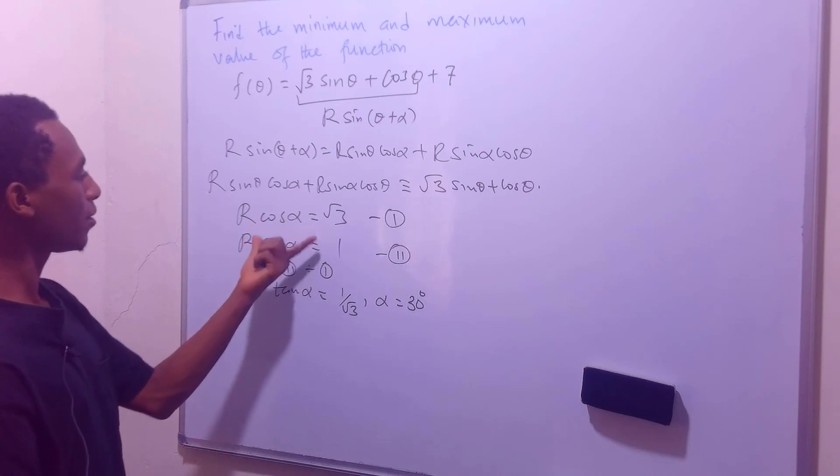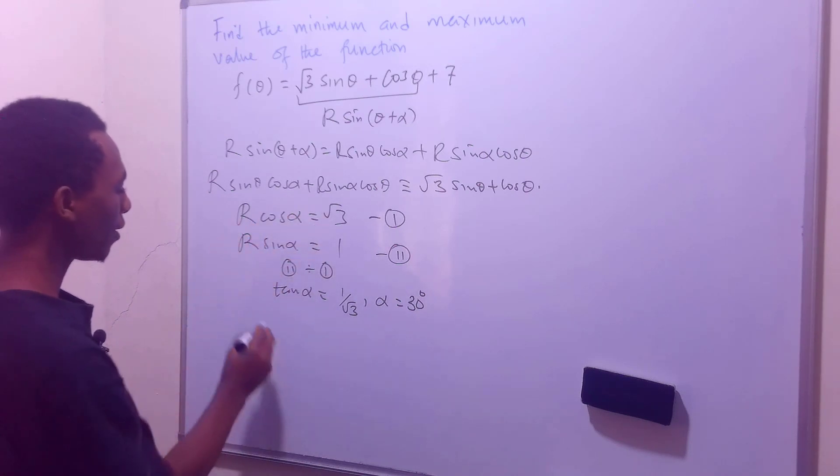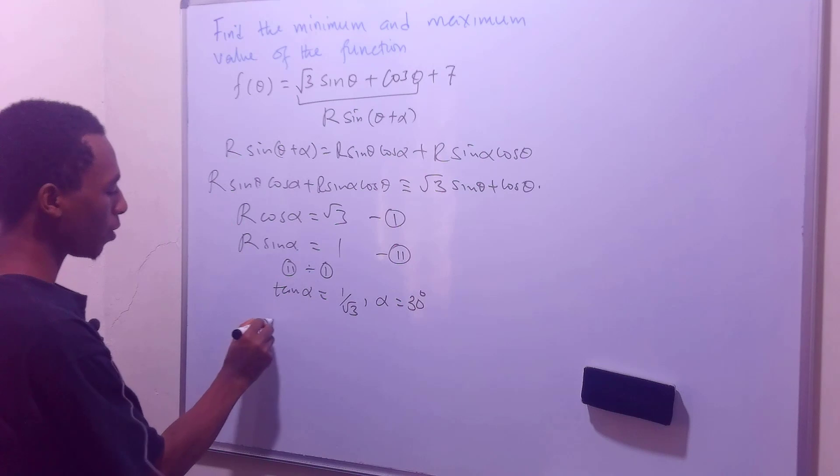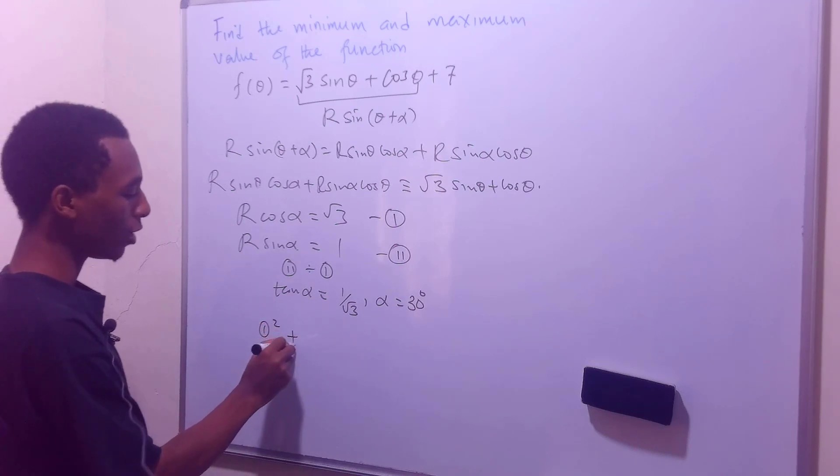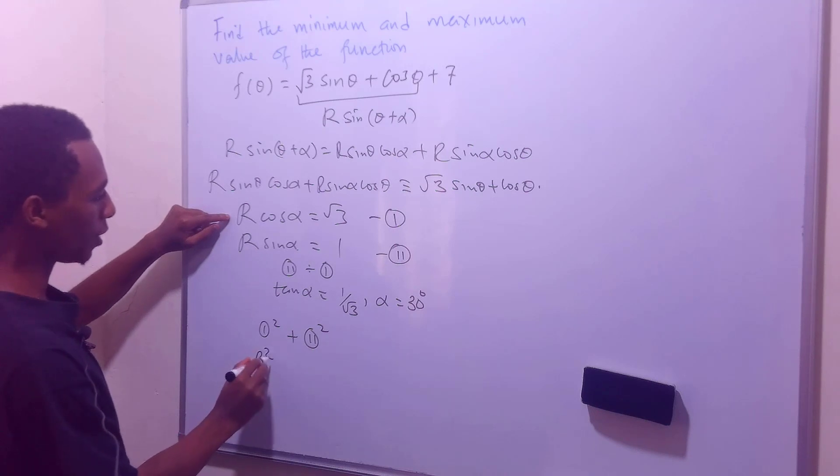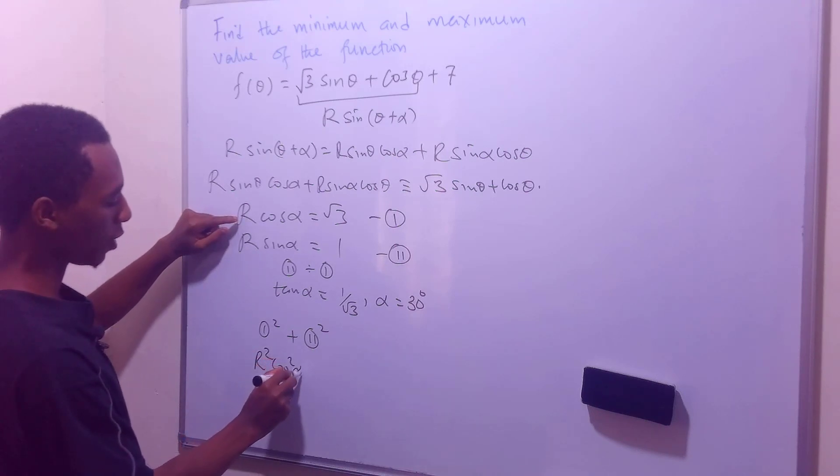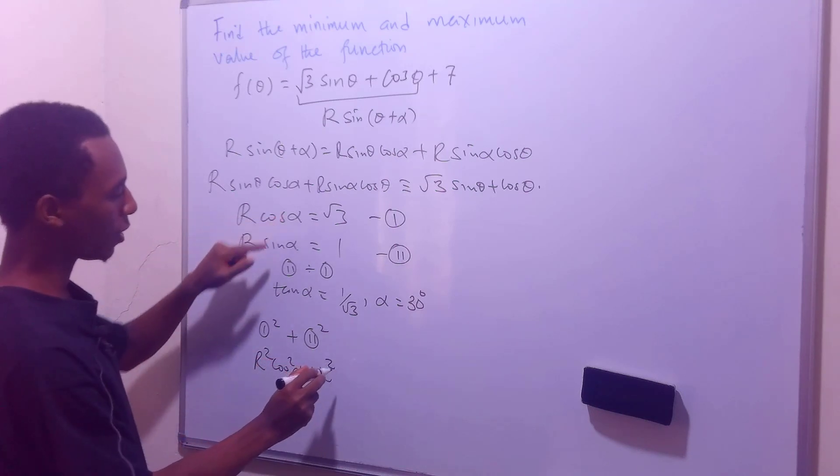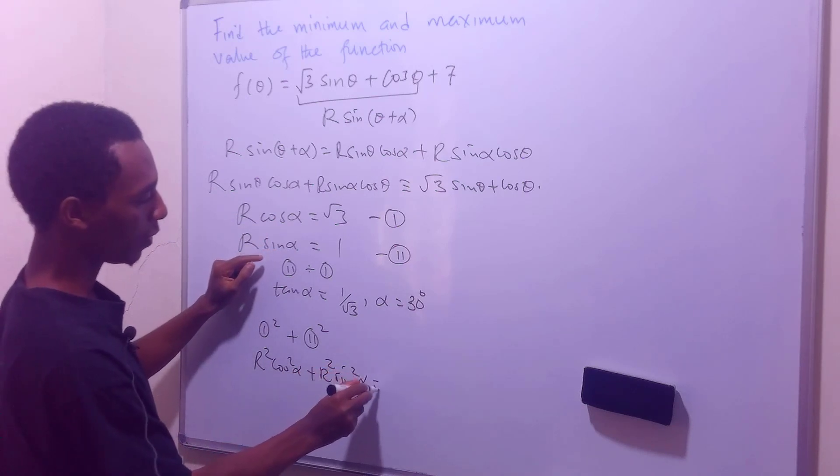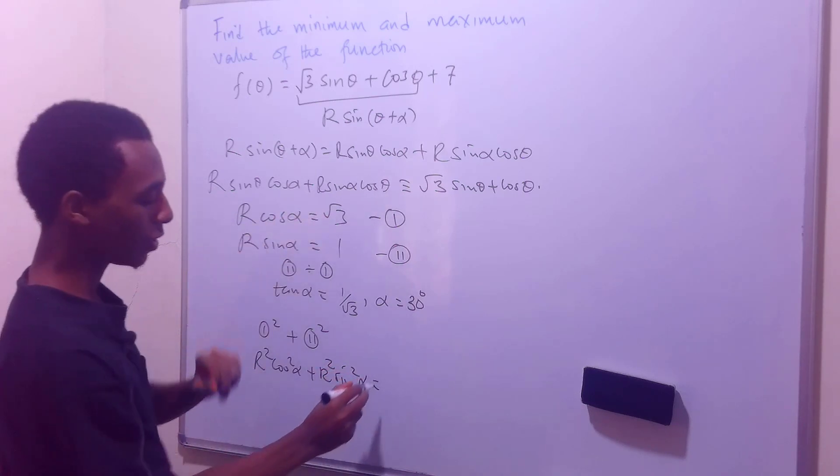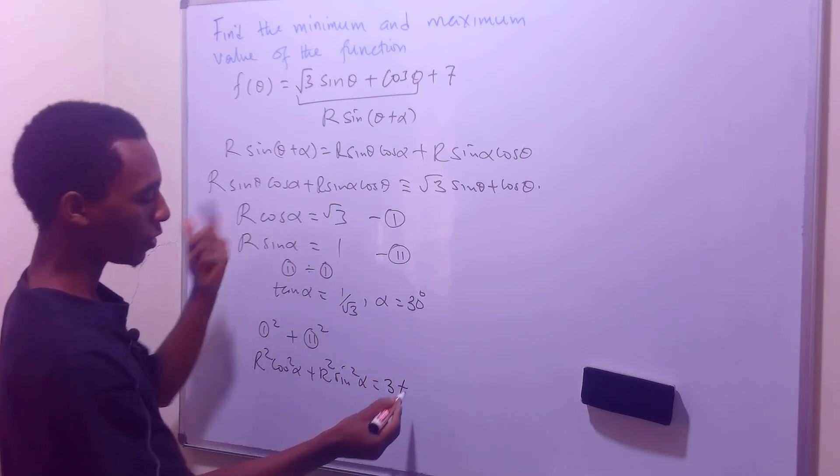And then still from equation 1 and 2, I can find r. So I'll get equation 1, I square it. I also get equation 2, I square it. So I'll have r² cos²(α) + r² sin²(α) = (√3)². That's 3 plus 1². That's a 1.